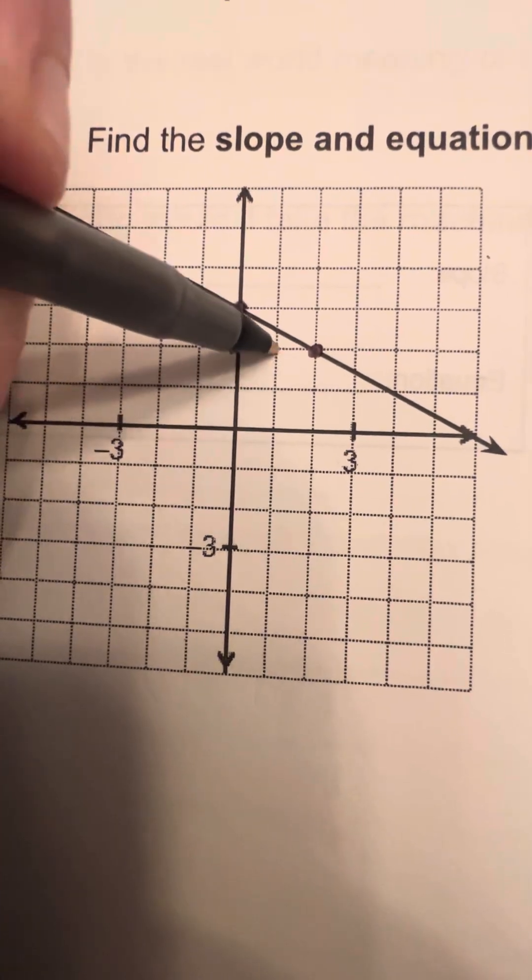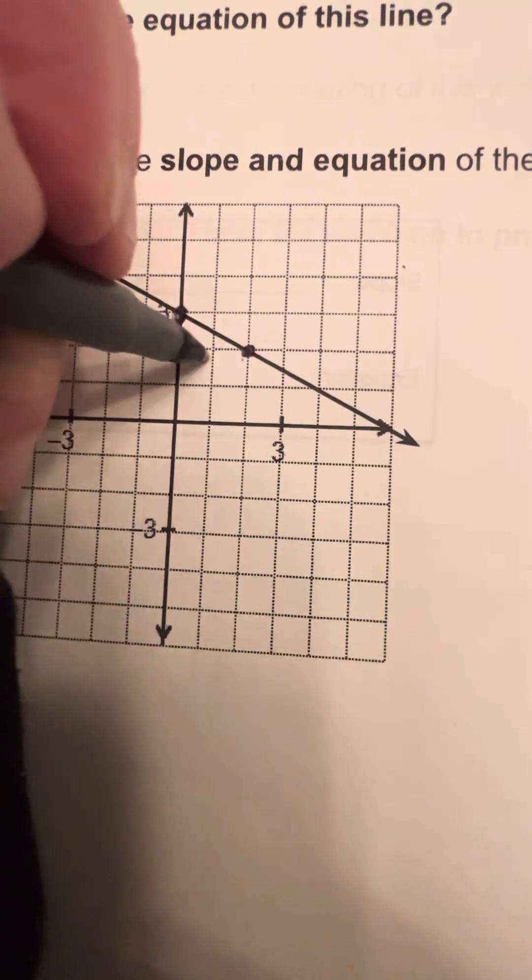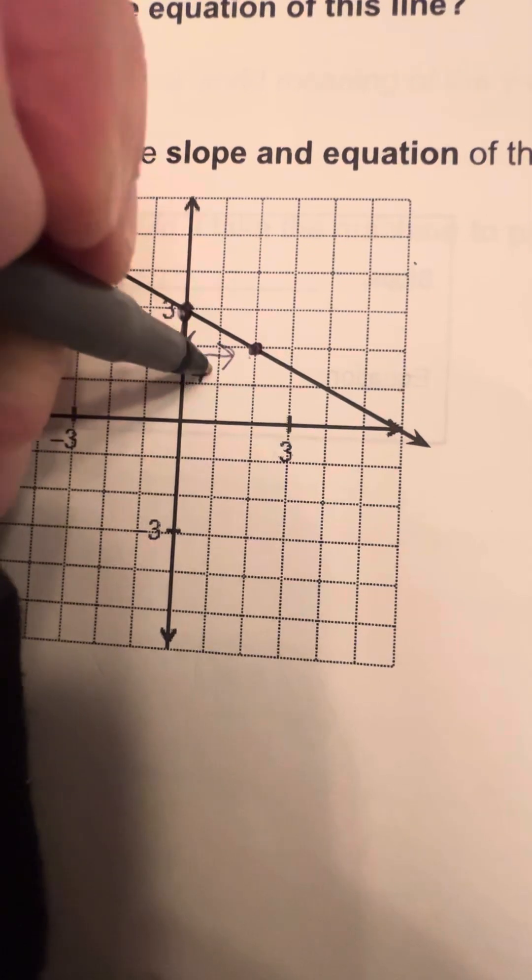And then we're going to, from here, count 1, 2 spaces this way. And since we're going to the right, it is a positive 2. So our slope is negative 1 over 2.